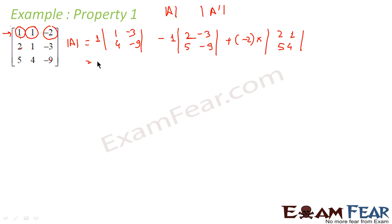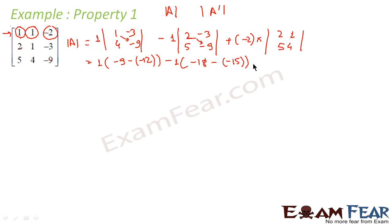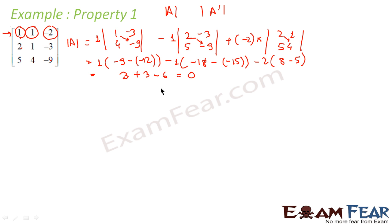Now computing: 1 into (1·(minus 9) minus 4·(minus 3)) equals 1 into (minus 9 plus 12) equals 3. Minus 1 into (2·(minus 9) minus 5·(minus 3)) equals minus 1 into (minus 18 plus 15) equals minus 1 into minus 3 equals plus 3. Minus 2 into (2·4 minus 5·1) equals minus 2 into (8 minus 5) equals minus 2 into 3 equals minus 6. So the total is 3 plus 3 minus 6 equals 0. Therefore determinant of A is 0.